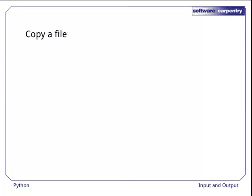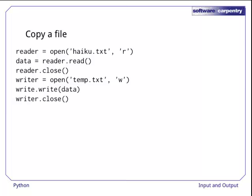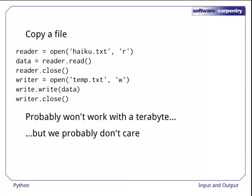So let's use what we've learned so far to copy one file's contents to another. Here's the first version. The first three lines read in everything from the source file, while the second three write it all out to the destination file. As before, this probably won't work with a terabyte of data, but in almost all cases that doesn't matter.